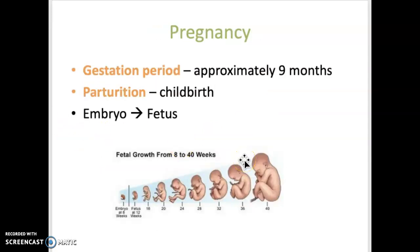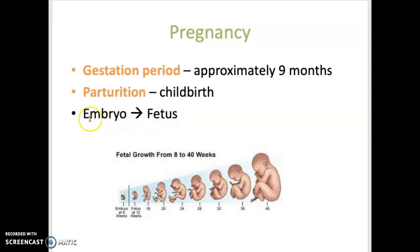Pregnancy, also known as the gestation period, lasts approximately nine months. Parturition is the term for childbirth. There are two terms related to the developing baby: the embryo and fetus. Embryo refers to the first three months of development, and then it's referred to as a fetus from the third month to the time of birth.